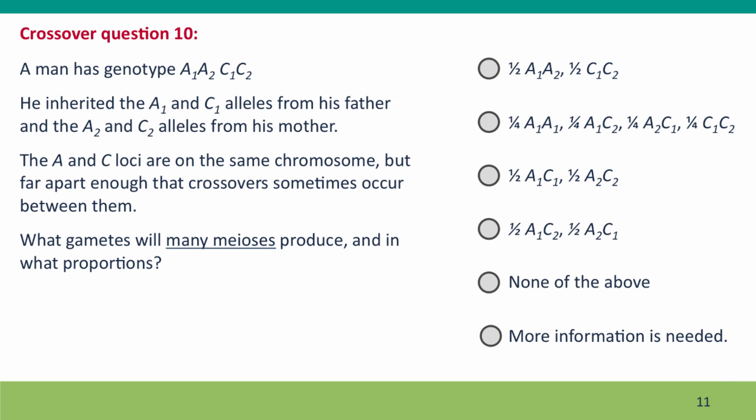Now, one more problem. Again, we have a man who's heterozygous for two genes on the same chromosome. You're told which alleles he inherited from his father and which from his mother. And you're told that the genes are far enough apart that sometimes crossovers occur. Which of these choices describes the combination of gametes that are going to be produced by many meiosis?